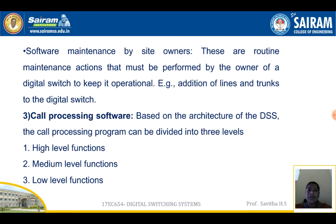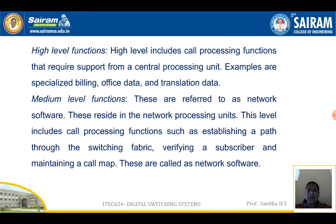Based on the architecture of the DSS, the call processing program can be divided into three levels: high-level functions, medium-level functions, and low-level functions. High-level functions include call processing functions that require support from a central processing unit; examples are specialized billing, office data, and translation data. Medium-level functions are referred to as network software. These reside in the network processing units and include call processing functions such as establishing a path through the switching fabric, verifying a subscriber, and maintaining a call map.